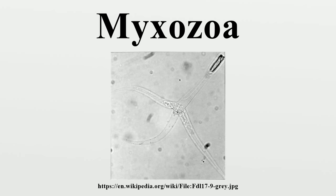Furthermore, enteromyxosis is caused by Enteromyxum leei in cultured marine sparids, while hamburger disease or proliferative gill disease is caused by Henneguya and Spherospora infections, which occur in common carp.